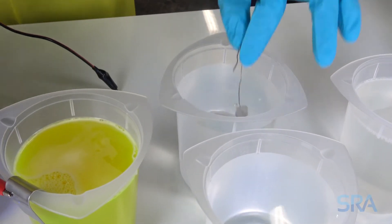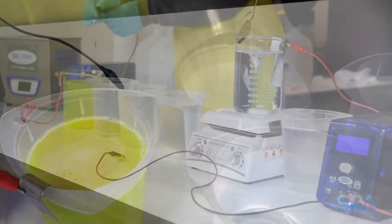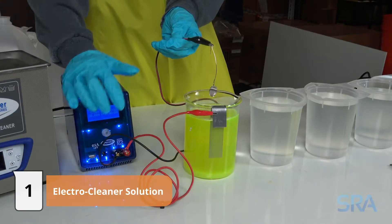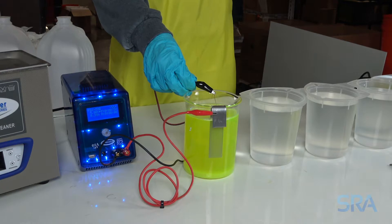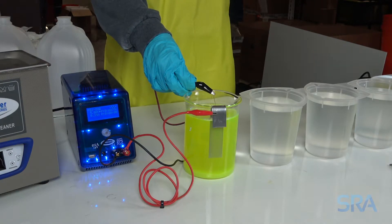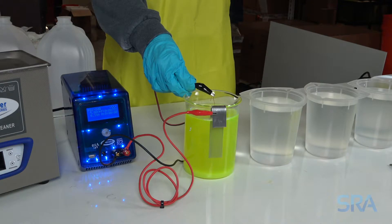For new items, you can usually go straight to the electro cleaner. Use a piece of copper wire to hold your item and connect the negative lead of the rectifier. Electro-clean for 1 minute at 125 degrees Fahrenheit with 5 volts applied to the stainless steel anode.